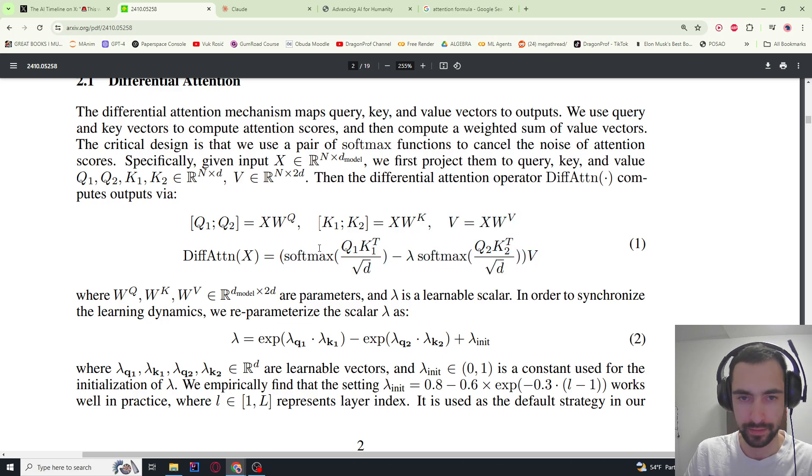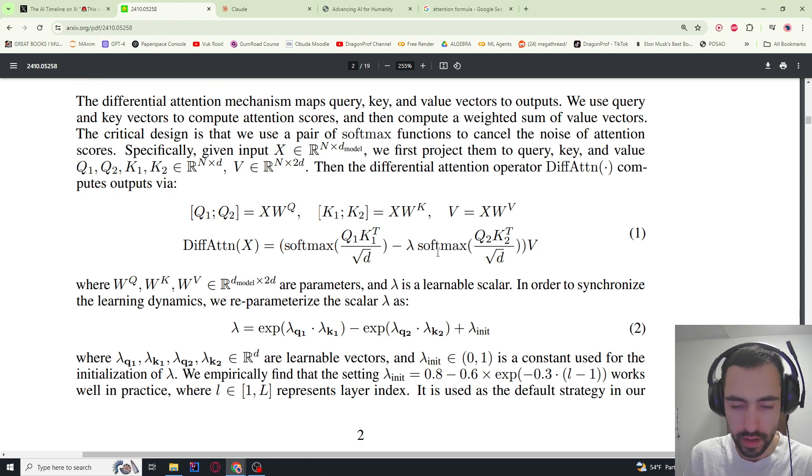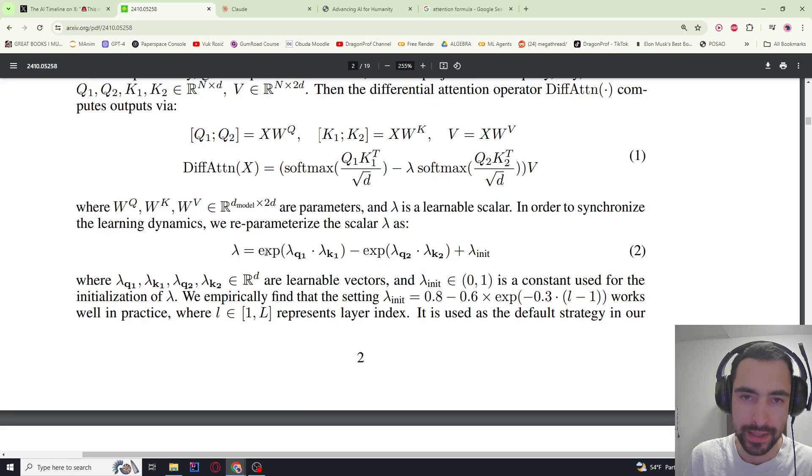Here we can see the main difference between the classic attention formula and this differential attention. The classic attention would be just this, but then they also have this lambda which is a learnable parameter that adjusts the strength of this part. You subtract this, but this is Q1, this is Q2, same goes for K. This is the first set of matrices, second set of matrices. The idea is that this should learn the noise, and when you subtract the noise from this, the most important things remain. Then they made lambda more complex: e^(-c) times this. These particular values were good in initialization and practice, and the reason they made lambda more complex is so the model can learn more complex structures from the data.